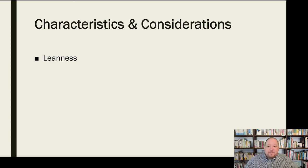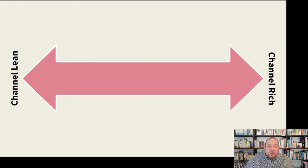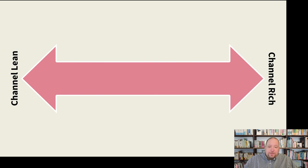With that in mind, let's think about characteristics and considerations that relate to communication channels. The first is leanness. Communication channels exist on a continuum in terms of being channel rich or channel lean — how many channels do you have access to, and how rich are those channels in terms of the ability to gain understanding and context? If there's a lot to be offered, we call that channel rich. If there's not, we call it channel lean. Every communication channel exists somewhere on this continuum.